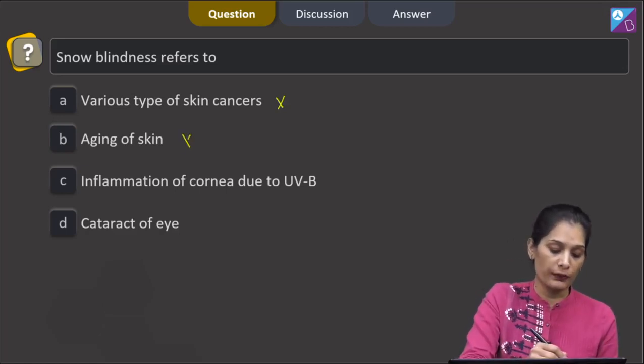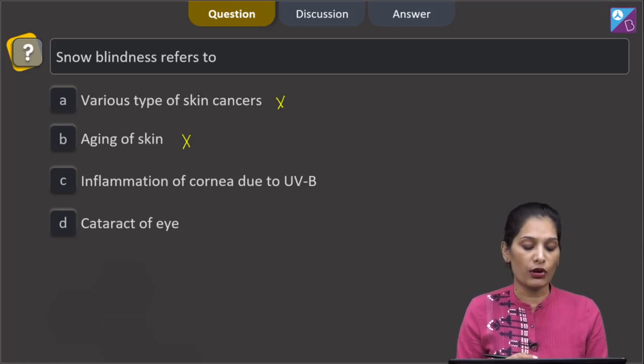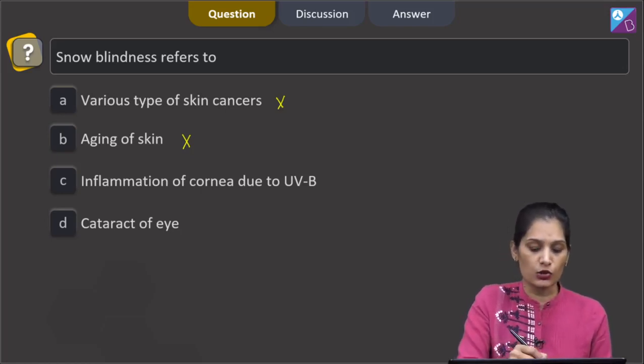B, aging of skin. No. C, inflammation of cornea due to UVB. Yes, this is true.